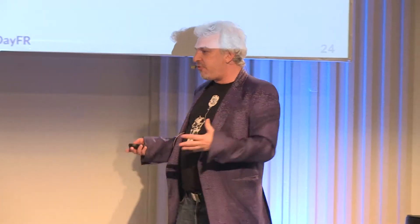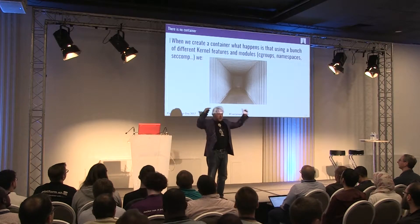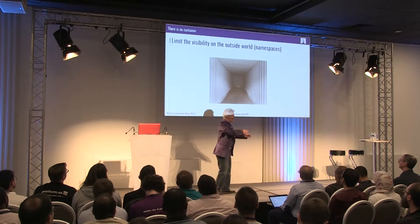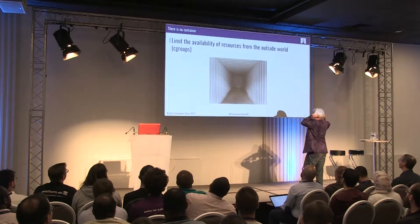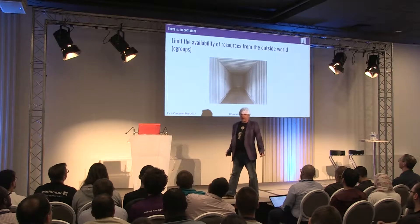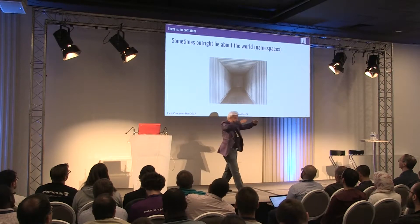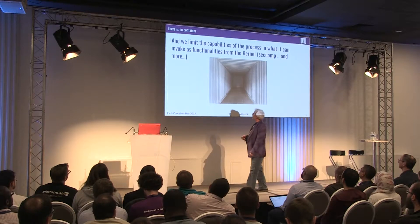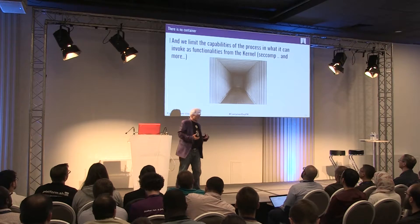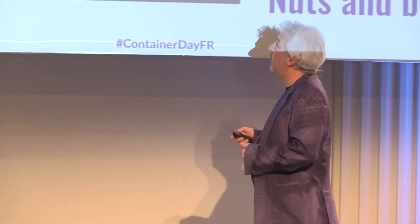It means we're using a bunch of kernel features to lessen the view of a specific process on its surrounding world. We segregate the outside world using namespaces, hiding everything that is not in your namespace. We tell a process it can't use everything from the outside world — this device is not yours, you can only get this much memory. These are cgroups. Sometimes we use namespaces to outright lie — the world is different than what you think. And we limit the executable's capabilities regarding the kernel itself, because these are not things that were built into Linux from the beginning.